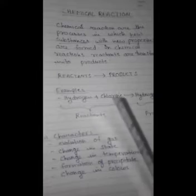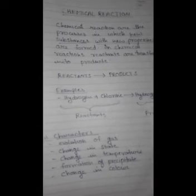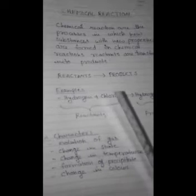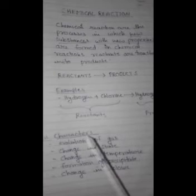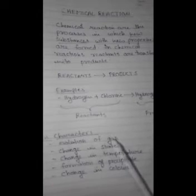For example, when hydrogen reacts with chlorine, hydrogen chloride is formed. Hydrogen and chlorine are reactants and hydrogen chloride is the product. The main characteristics of chemical reactions are evolution of gas, changing in state, change in temperature, formation of precipitate, and change in color.